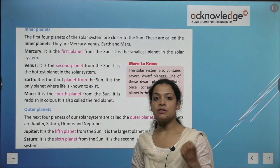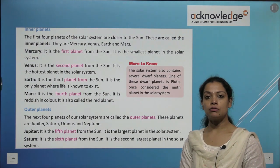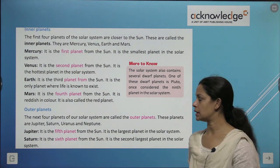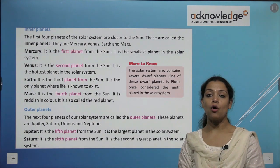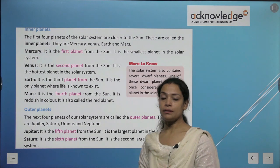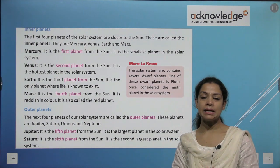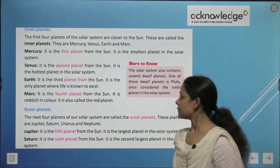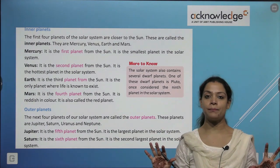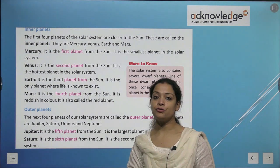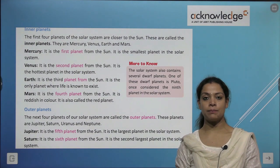Mercury is the first and smallest planet, and it is the closest to the sun. Venus is the second closest to the sun and is the hottest planet in the solar system. Earth is the third planet from the sun and the only planet where life exists. Mars is the fourth planet from the sun and is reddish in colour — it is also called the red planet.